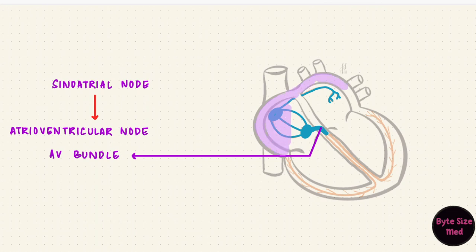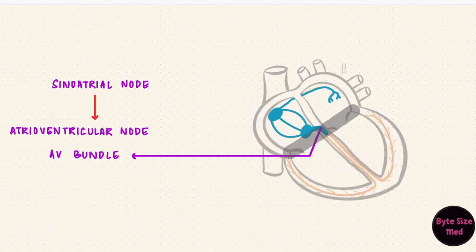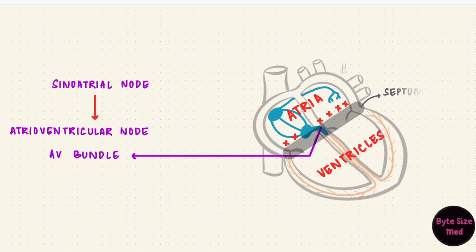You may wonder why the impulse doesn't get conducted to the ventricular cells directly from the atrial cells. That's because between the atria and ventricles there is a fibrous septum, which is part of the cardiac skeleton. This septum acts like an electrical insulator — it doesn't allow impulses to be conducted between the atria and the ventricles except through the atrioventricular node and the atrioventricular bundle.